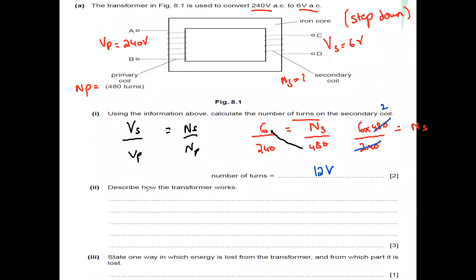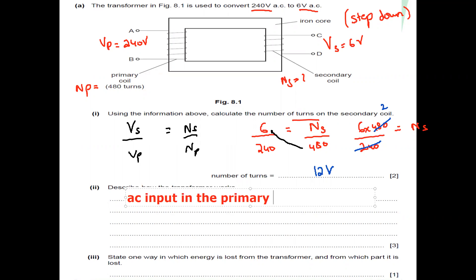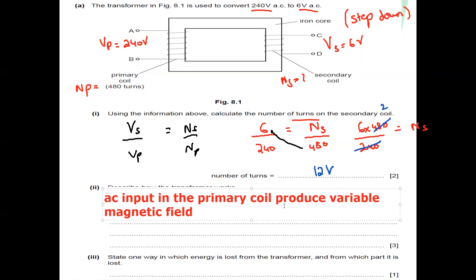The second part asks us to describe how a transformer works. First, always remember that transformers work with AC. The AC input in the primary coil produces a variable or changing magnetic field — that is the first point.